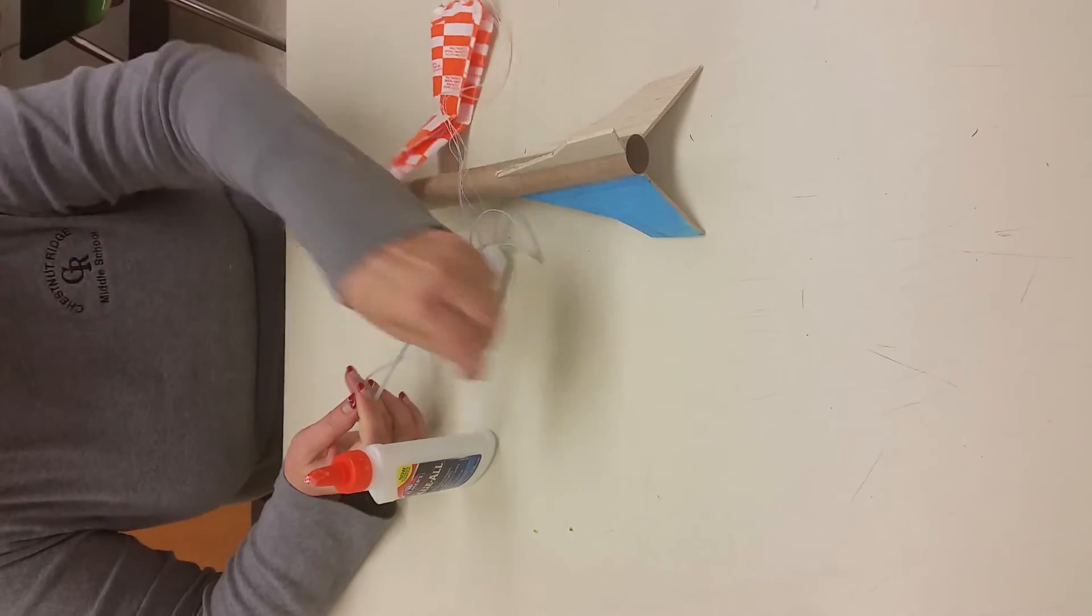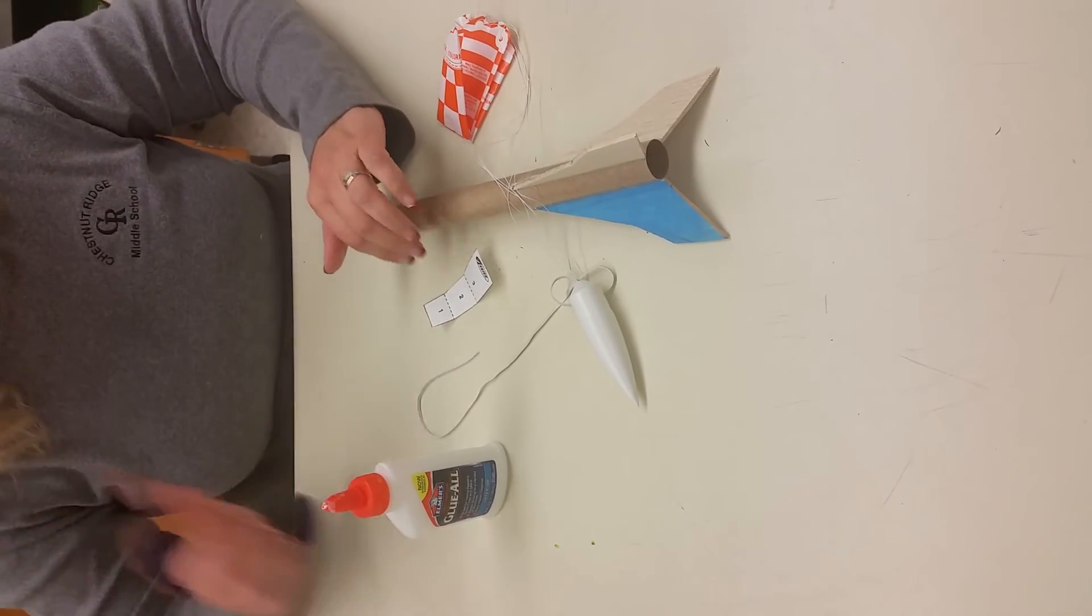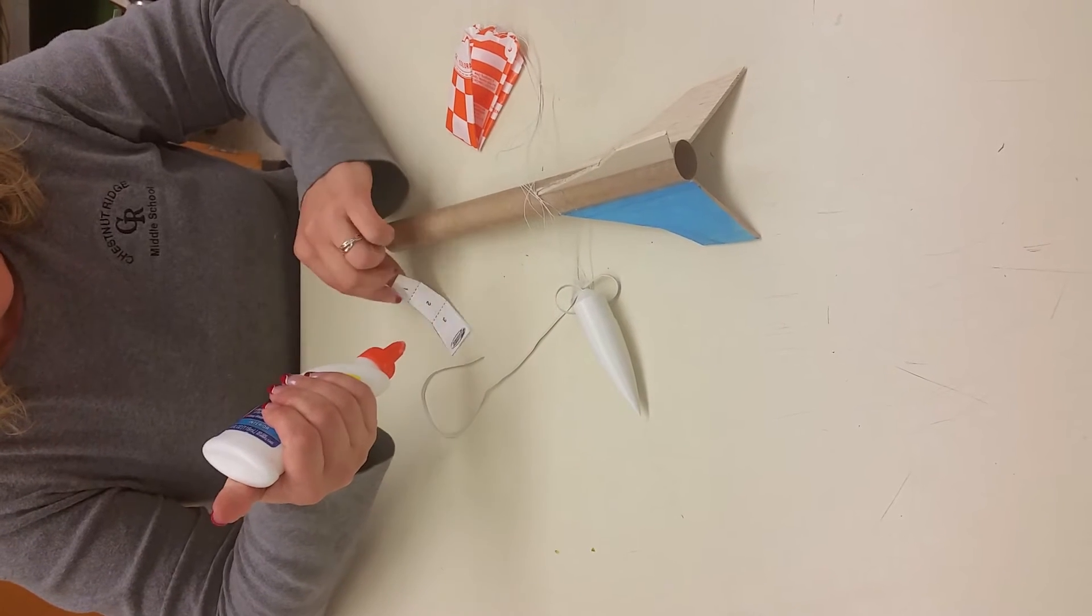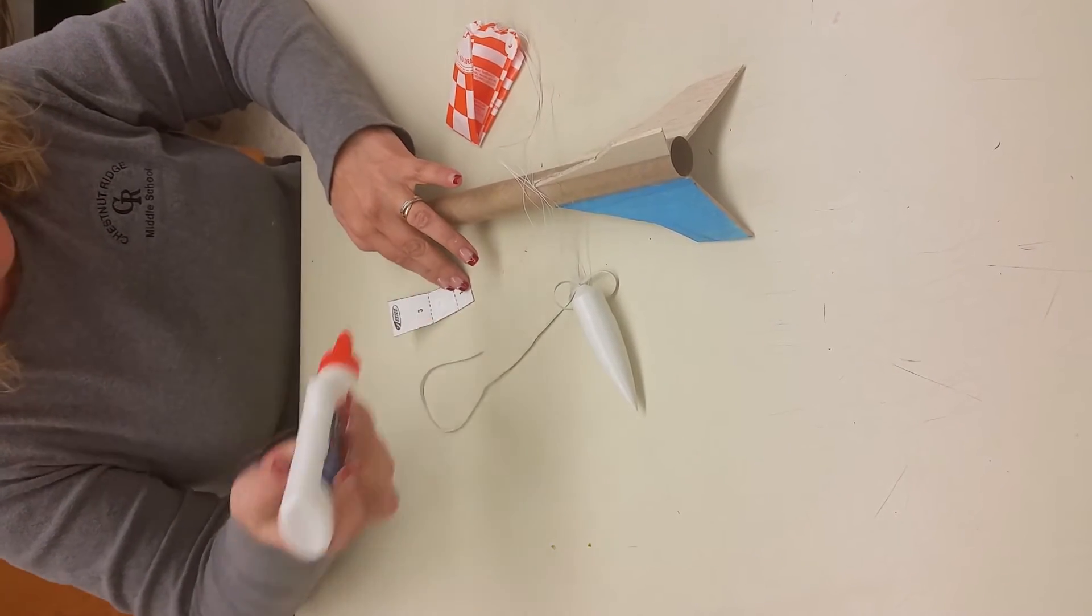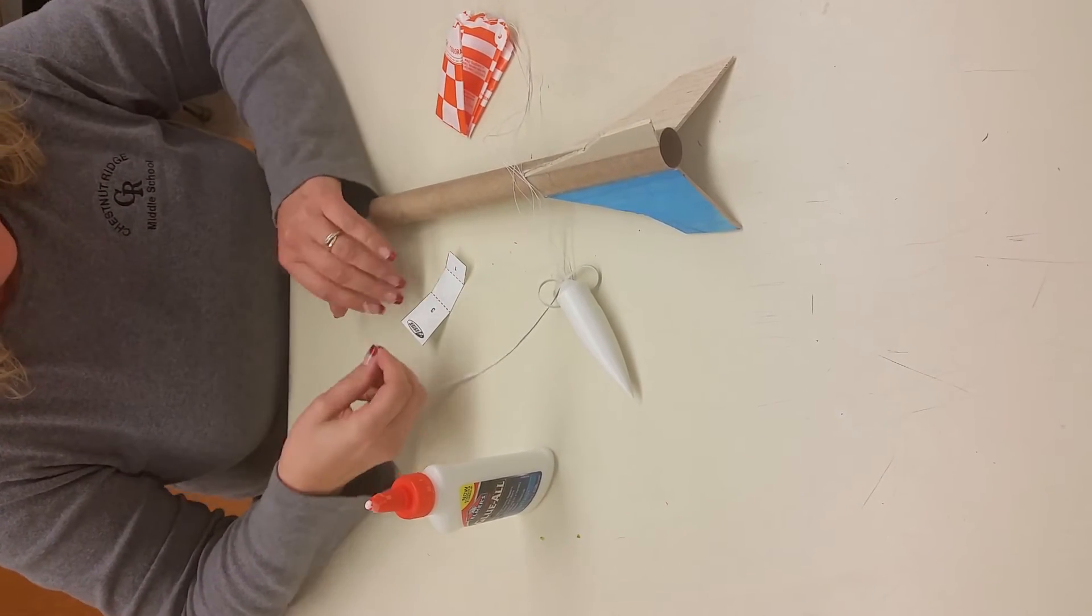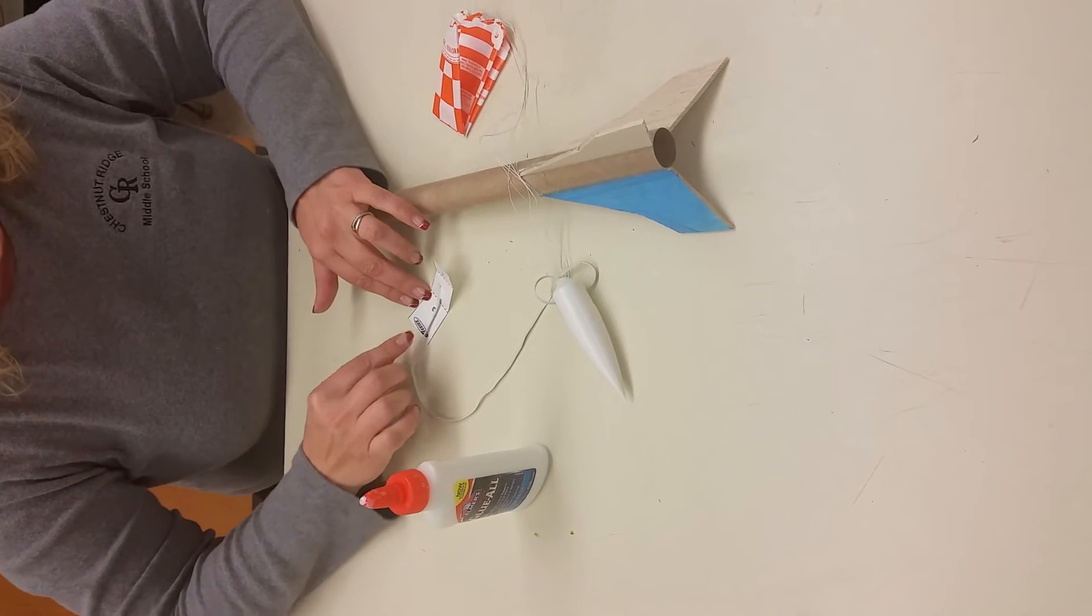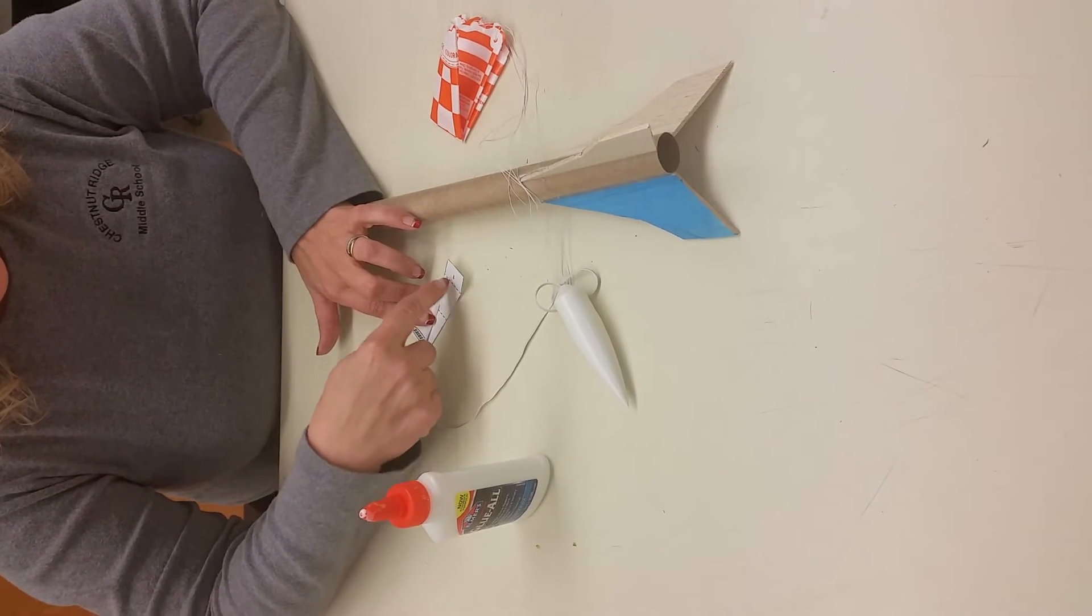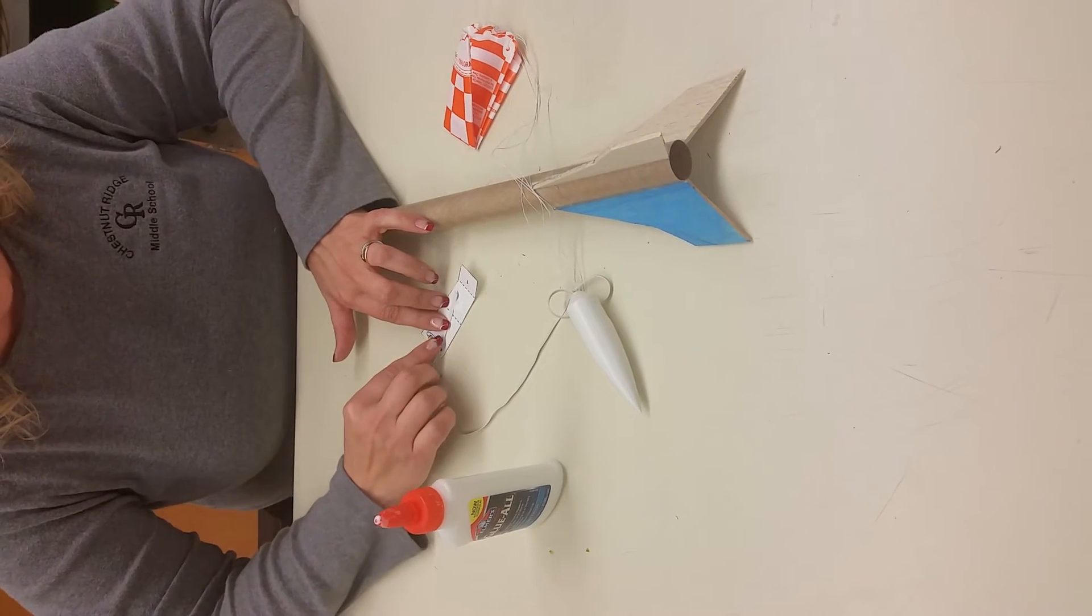Now we have to put the shock cord inside of our shock cord mount so that we can glue it inside the body tube. We're going to put a drop of glue on section two of our shock cord mount, and we're going to lay our shock cord down on a slight diagonal. It's going to be flat going in a slight diagonal. I forgot to mention you want to fold this slightly on the perforated lines and put it on a slight diagonal.